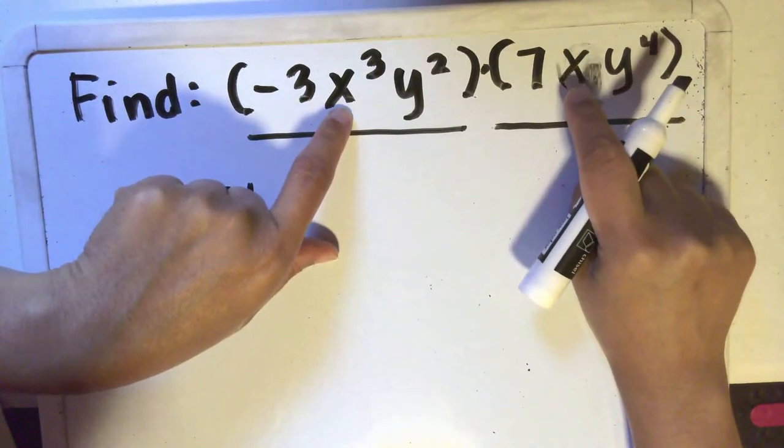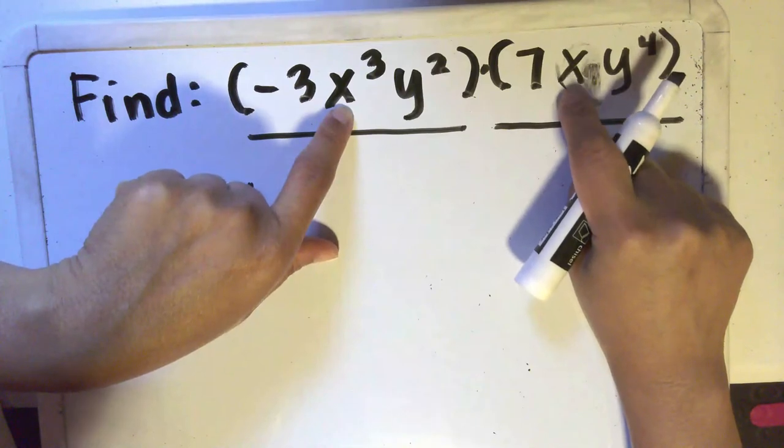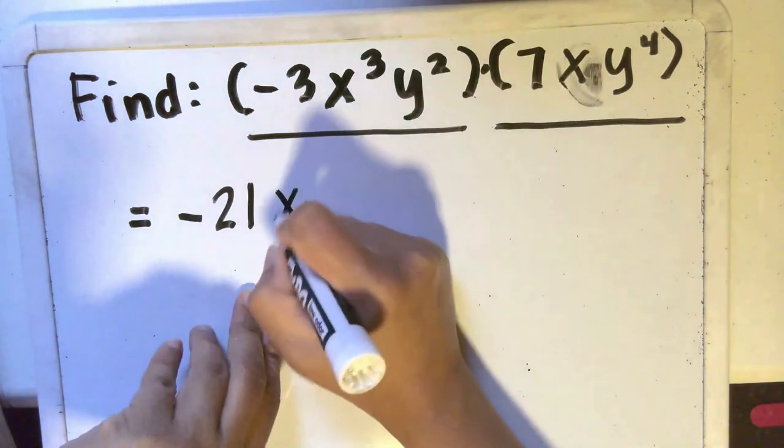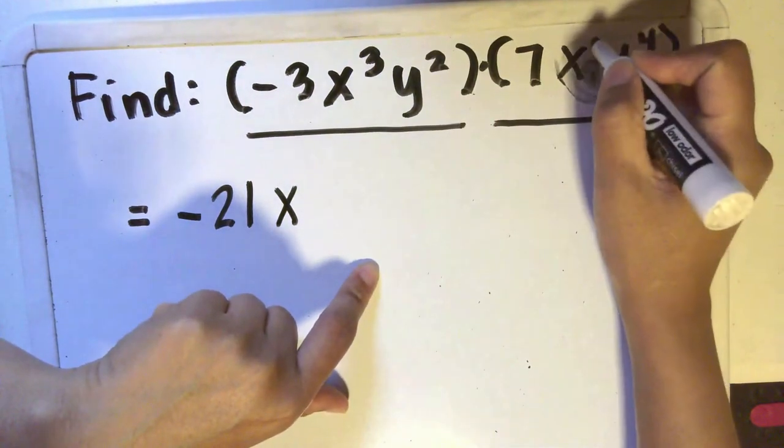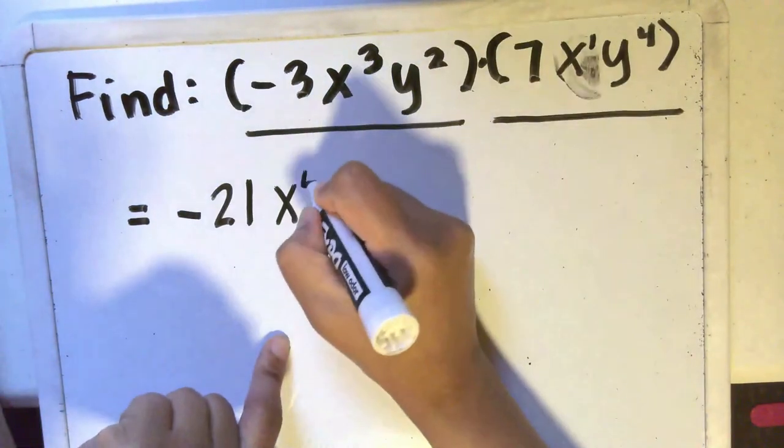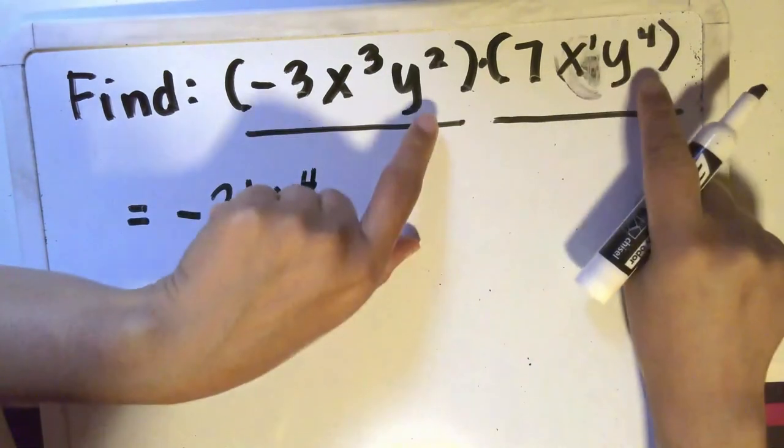When you're multiplying x cubed and x, you will copy the base, which is x, and then you're going to add their exponents. If you don't see a number right there, that means the exponent is 1. So 3 plus 1 is 4, so that becomes x to the fourth.